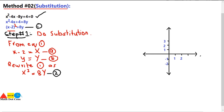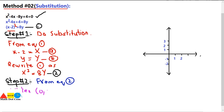Step two: we find the focus, vertex, and directrix of equation number 2. Equation 2 — X squared equals 8Y — is the standard form of a parabola with vertex at the origin (0, 0). We can state this immediately just by looking at the equation.